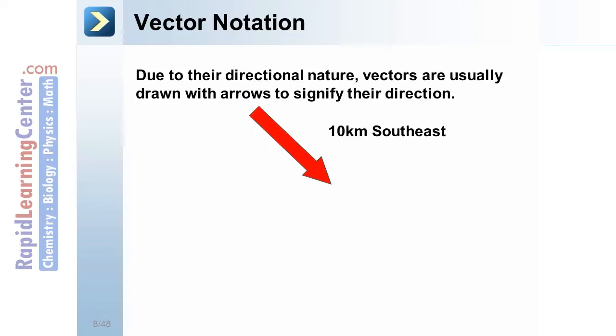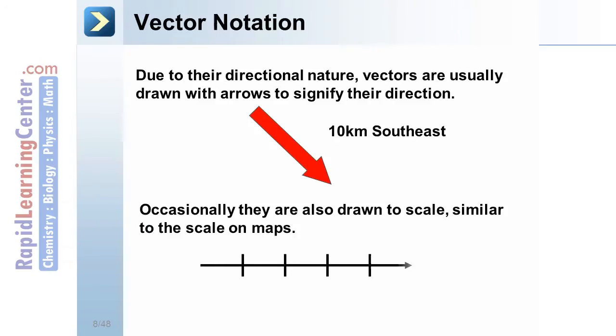Vector notation. Due to their directional nature, vectors are usually drawn with arrows to signify their direction. Note the arrow that points in the southeast direction. Occasionally, they are also drawn to scale similar to the scale on maps. The scale may vary.